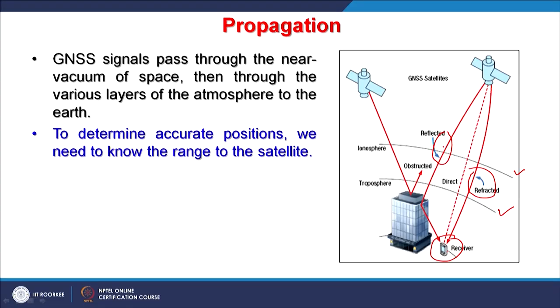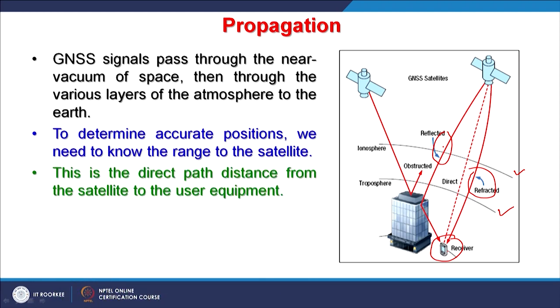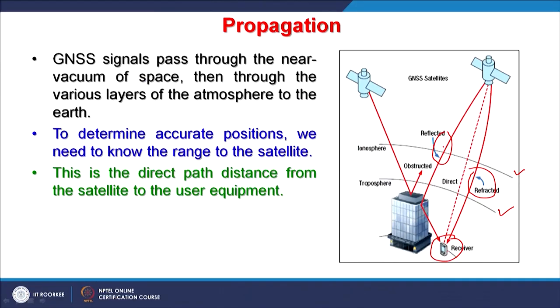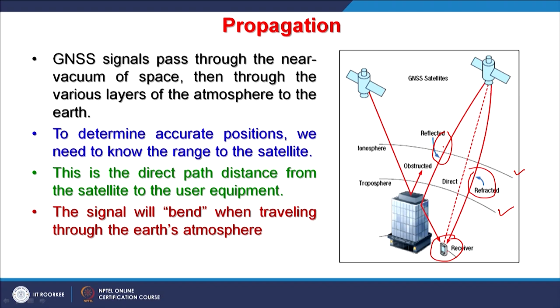Sometimes signals may get reflected from buildings, mountains, or forests. These obstructions add additional path length to the signal received by the receiver. Recall that when the range is larger, the time difference is large and a larger imaginary sphere will be constructed. This will give you the wrong position. In order to determine accurate positions, we need to know the exact range to the satellites, which comes from the time difference — this should be the direct path distance from satellite to user equipment, but many times it is a reflected path instead.